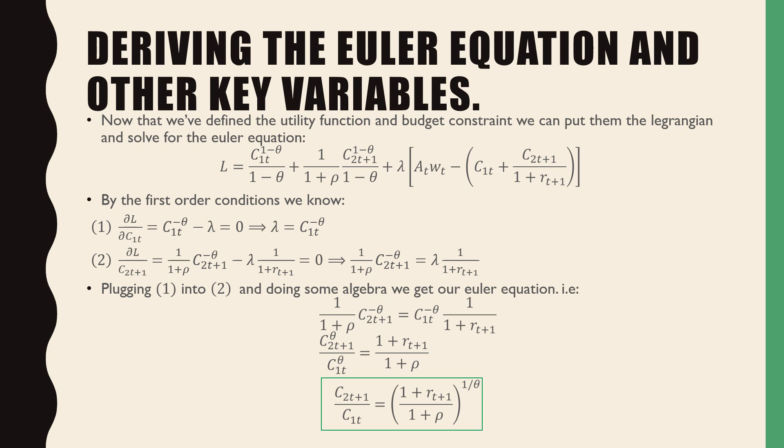So there's some algebra on this slide but I'm just going to go point right at our final result over here. So our Euler equation, which is our consumption ratio in each period, is equal to 1 plus rt+1 all over 1 plus ρ raised to the power of 1 over θ. That's our Euler equation.